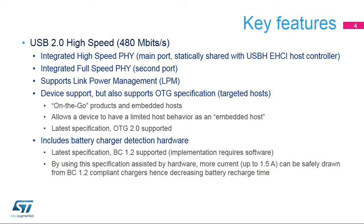Let's look at some of the key features of this USB high-speed interface, which is a USB specification 2.0 compliant interface that operates at a 480 megabits per second bit rate. In the simplest form, a USB FS device can be implemented. Built-in support for link power management adds enhanced power modes on top of the USB 2.0 specification. The on-the-go or OTG functionality enables implementation of an OTG product or an embedded host, both of which have the capacity to behave as a targeted host. The battery charger detection function allows for increased current to be drawn from BC 1.2 compliant chargers up to 1.5 amps. USB 2.0 high-speed is also available via the ULPI interface.